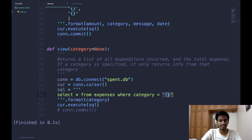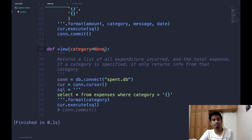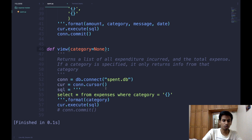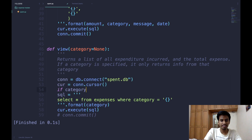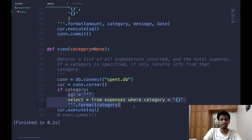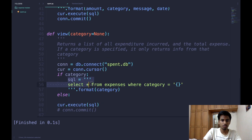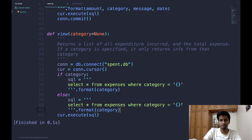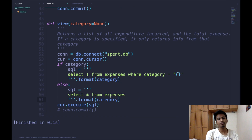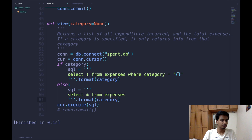There's a problem: category is an optional parameter. The user can do 'spent view' to get all expenses, or 'spent view food' for a specific category. We handle this with a conditional: if category is defined, use the WHERE clause query; otherwise the SQL query is simply 'SELECT * FROM expenses' with no filter, selecting all information from the expenses table.